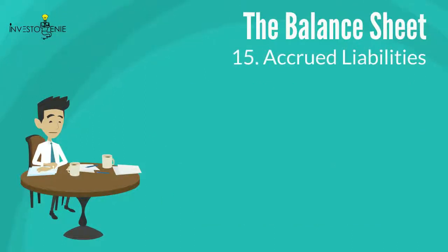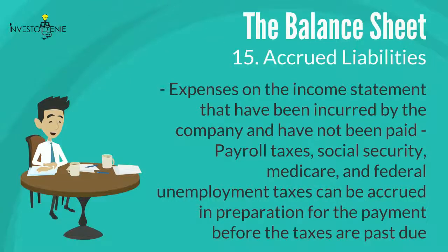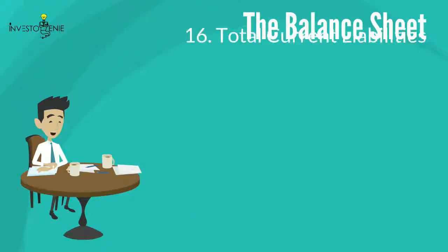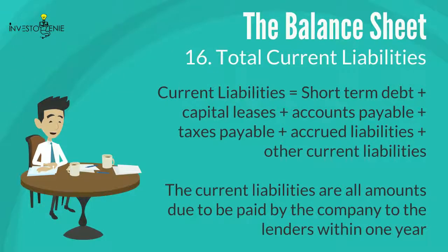Fifteen: accrued liabilities reflect expenses on the income statement that have been incurred by the company but not yet paid. Payroll taxes, Social Security, Medicare, and federal unemployment taxes can be accrued in preparation for payment before taxes are past due. Sixteen: total current liabilities are the sum of short-term debt, capital leases, accounts payable, taxes payable, accrued liabilities, and other current liabilities. Current liabilities are all amounts due to be paid by the company to lenders within one year.